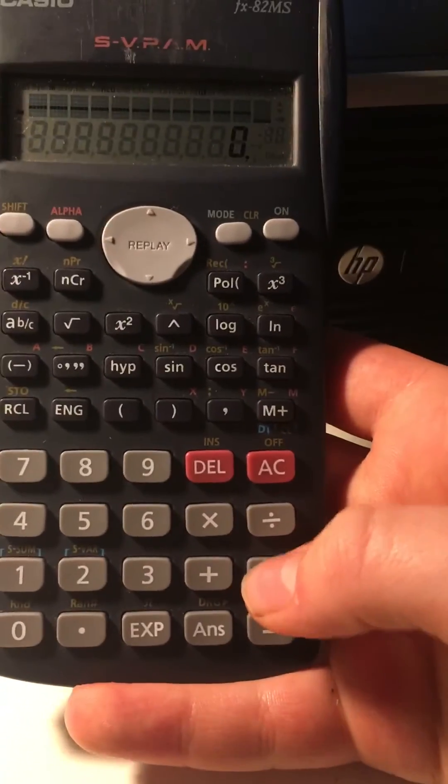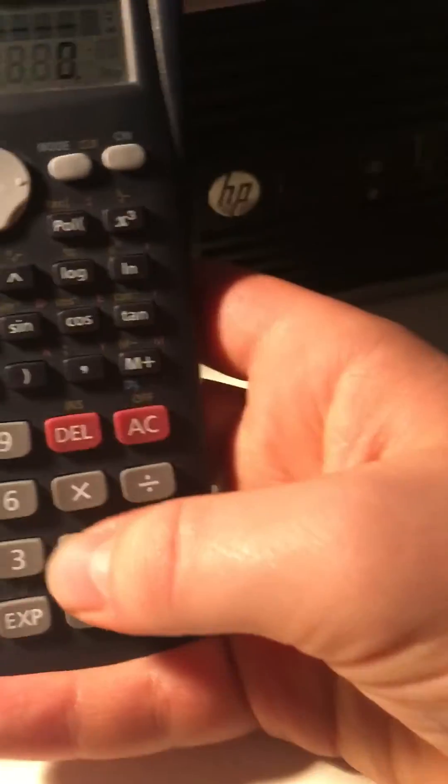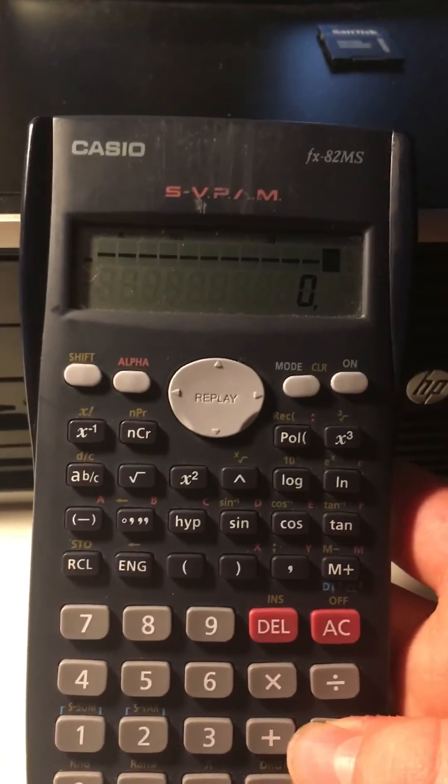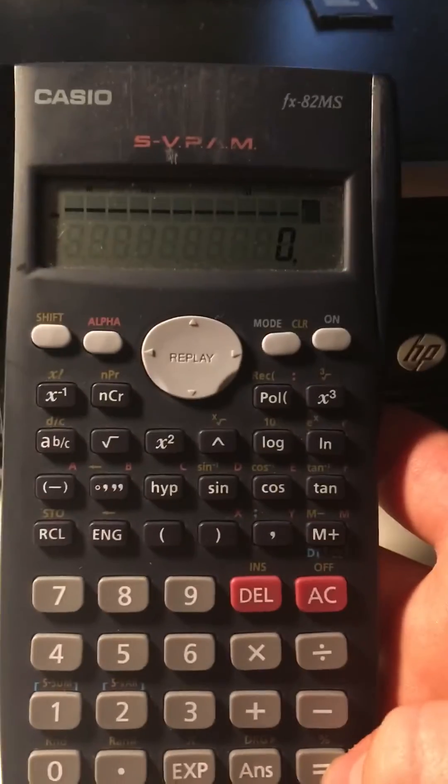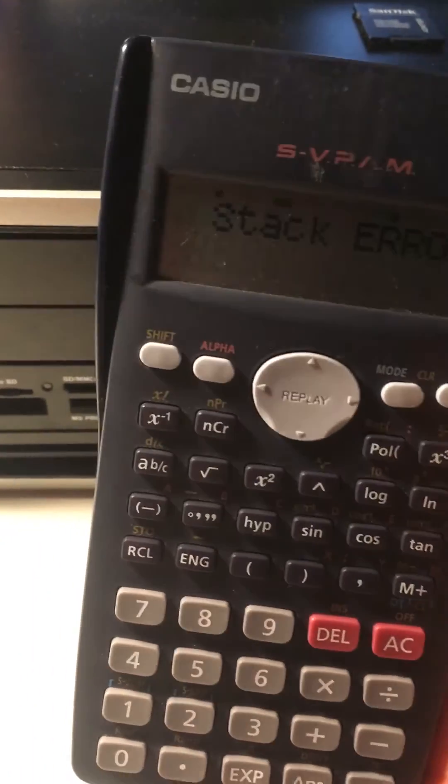When the last block turns black, just like this, you can press plus. And if it doesn't turn into a plus, it means that you have too much. So I'm going to press the equal button. And it says stack error because you have too much.